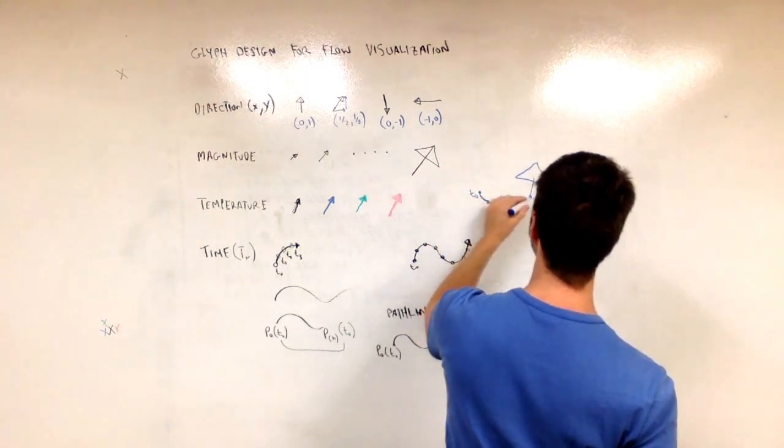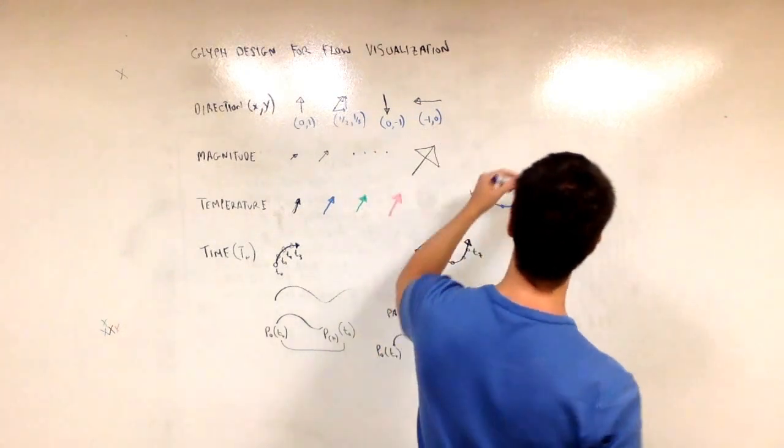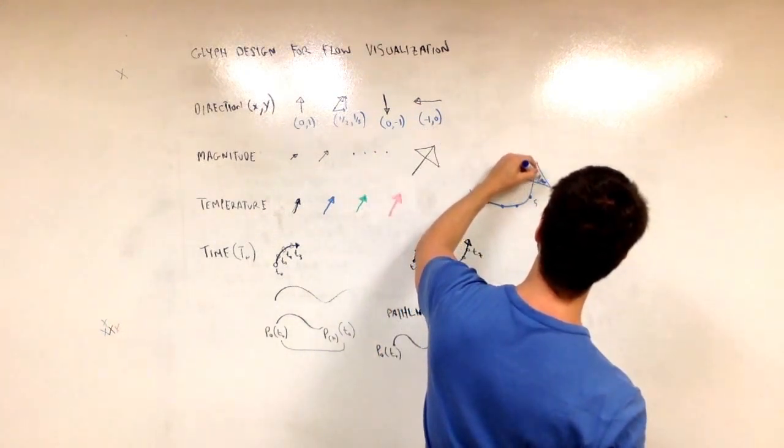And I have the magnitude encoded in the size of the arrowhead. So this is a big magnitude. So I think I got everything.